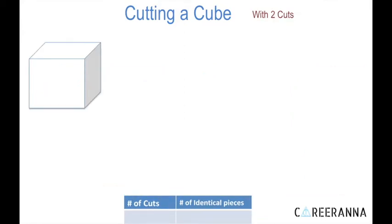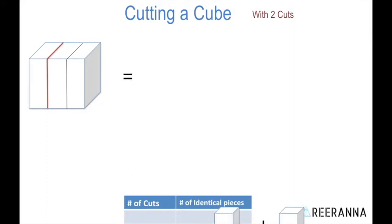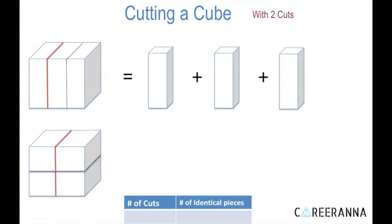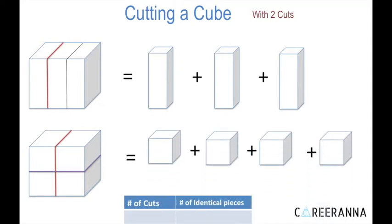Talking about cutting a cube with two cuts: I can put two parallel cuts and I'll have three identical pieces. However, there is a different way of cutting this cube with two cuts — I put one cut this way and the second cut perpendicular to the first one. In this case, I get four identical pieces. So the maximum number of identical pieces with two cuts is four.